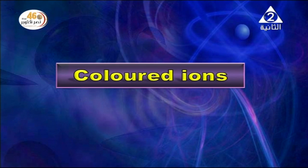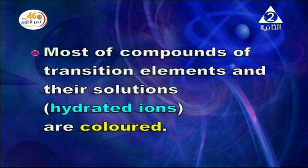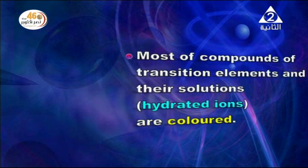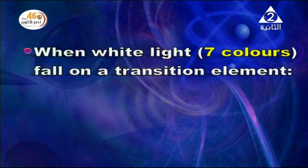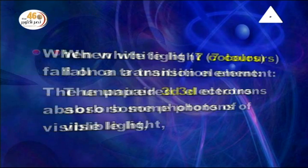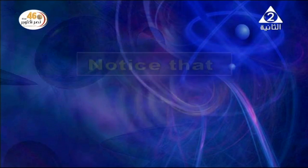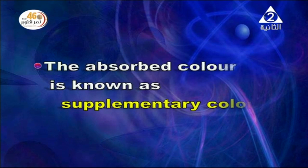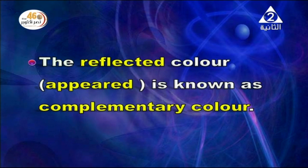The next property is colored ions. Most compounds of transition elements and their solutions (hydrated ions) are colored. When white light (seven colors) falls on a transition element, the unpaired 3d electrons absorb some photons of visible light, raising the 3d electrons to higher energy levels, while the other colors are reflected, giving the eye the apparent color. The absorbed color is called the supplementary color, and the reflected color (the apparent color) is called the complementary color.